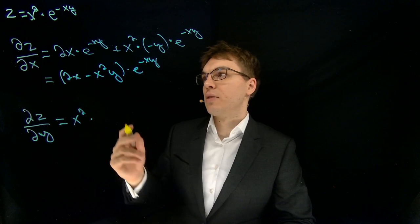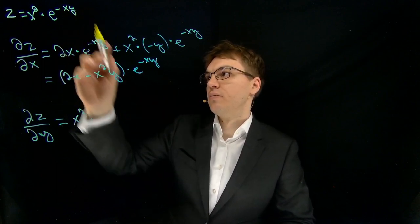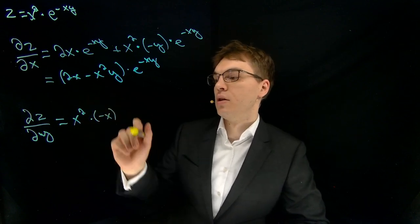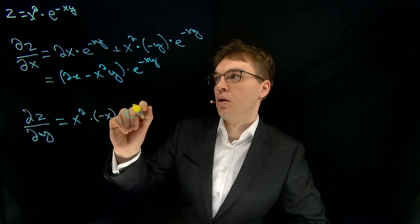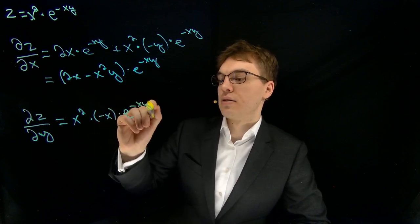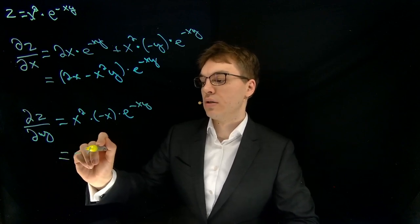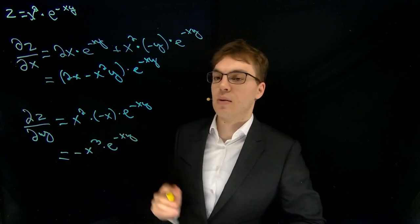Well, we already had something similar over here. It's just taking the derivative of this part over here, which in this case is minus x, because x is the constant here, times e to the power of minus x times y. And we can simplify this a little. Minus x to the power of 3 times e to the power of minus x times y.